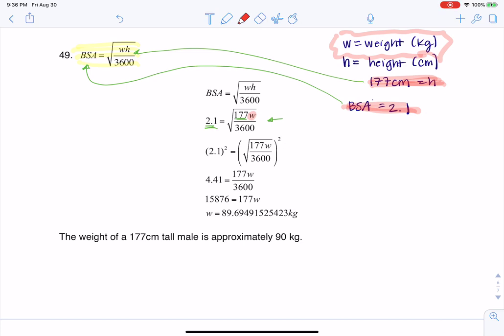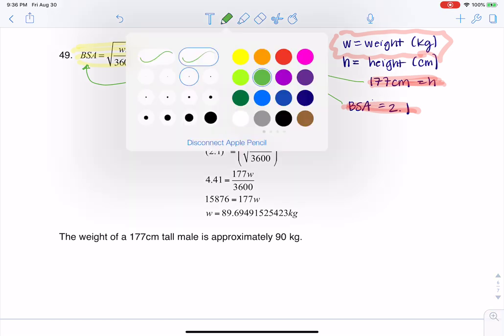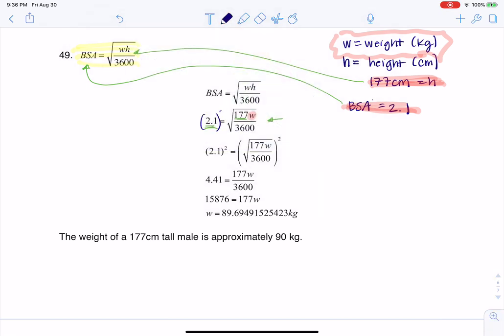And then what I'm left with solving for is this weight. And because that weight is under a square root symbol, the first thing I'm going to do to both sides of that equation is square both sides. And when I square both sides, if you plug into your calculator, 2.1 squared, you're going to arrive at 4.41.